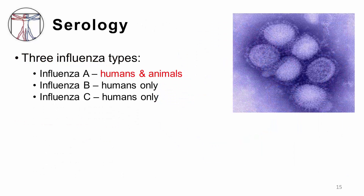Within the orthomyxo family are three types of influenza, named A, B, and C. This grouping is based on the internal ribonuclear proteins. Influenza A has the ability to infect both humans and other mammals, as well as birds, and this characteristic makes it responsible for several influenza pandemics, which we will discuss further.